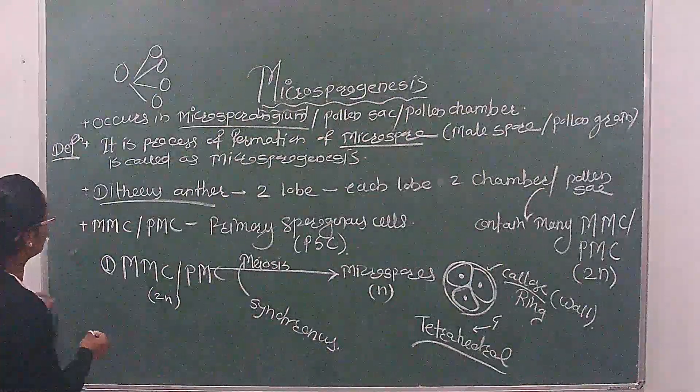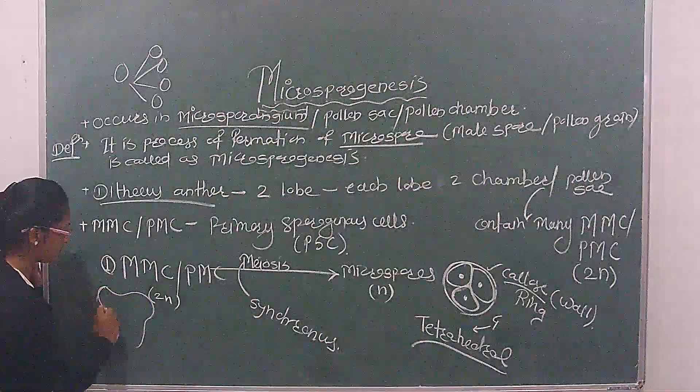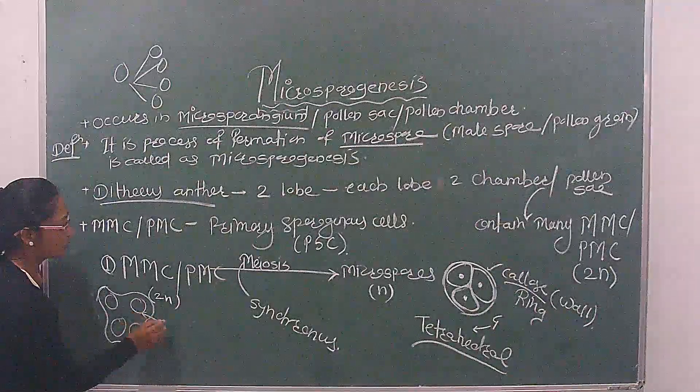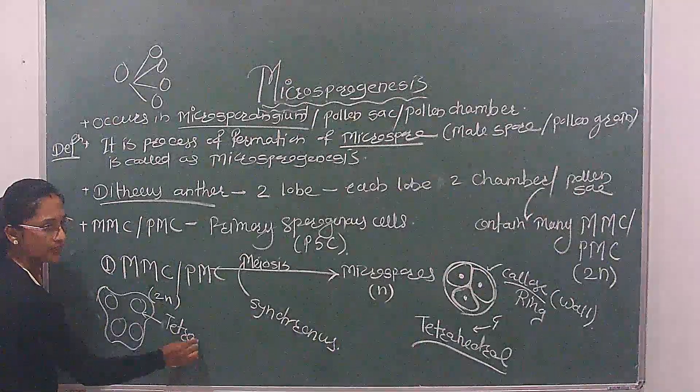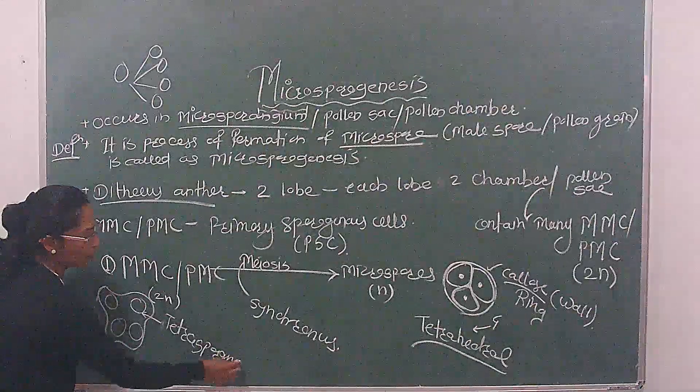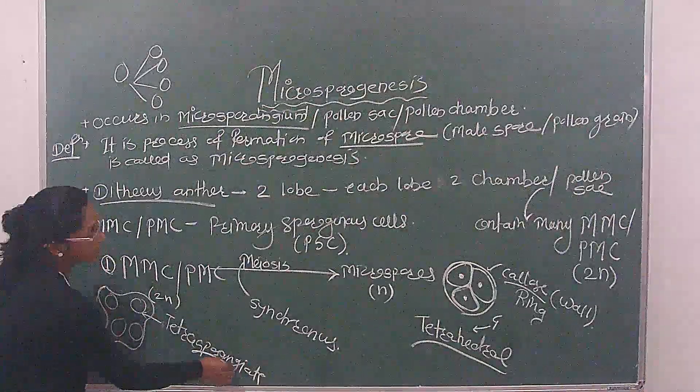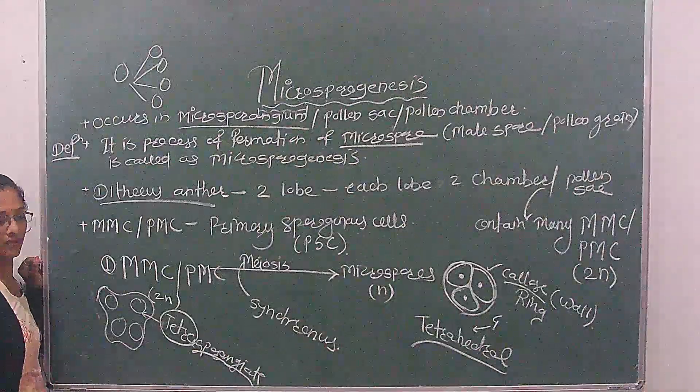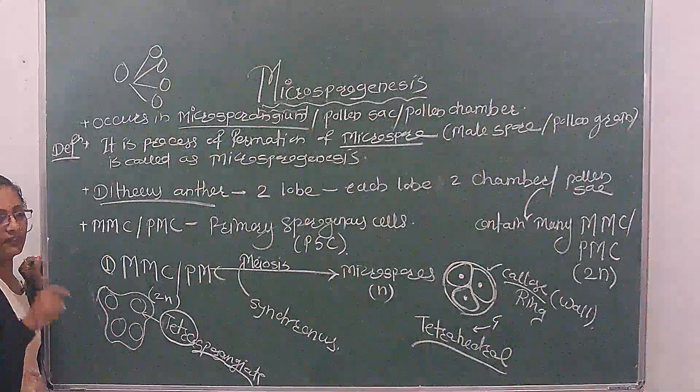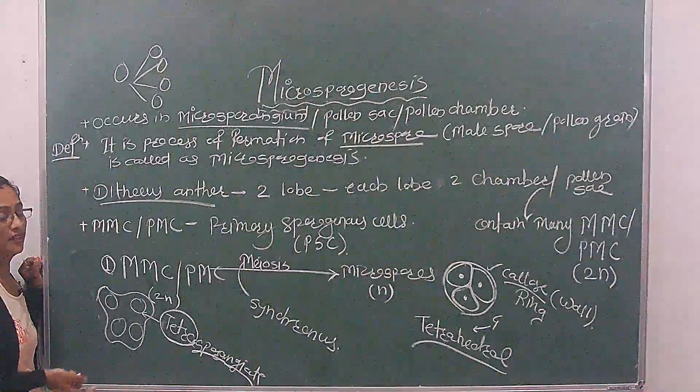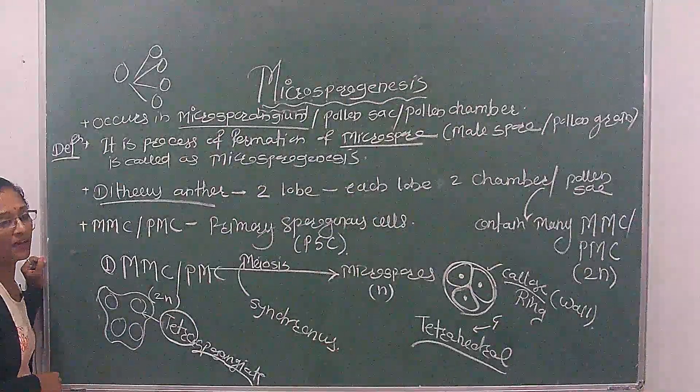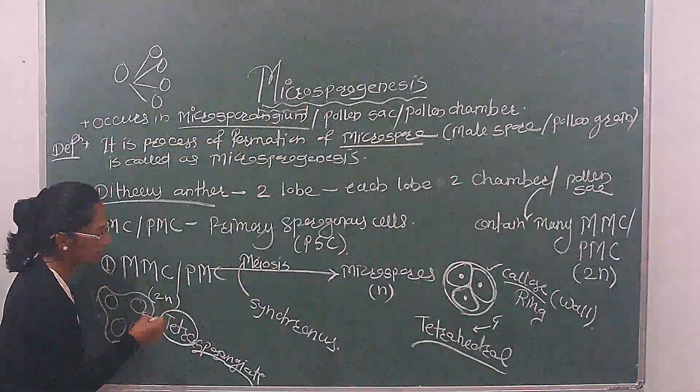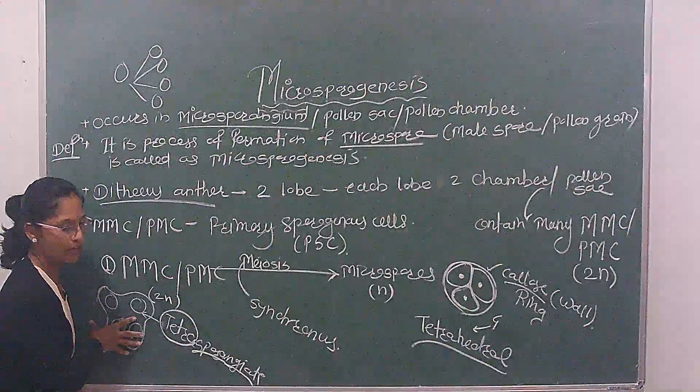Tetrad means four. Microsporangium - tetrasporangiate type. Dithecous anther is tetrasporangiate type and monothecous anther is bisporangiate type. This is a simple question you should know: tetrasporangiate type is dithecous and bisporangiate type is monothecous.